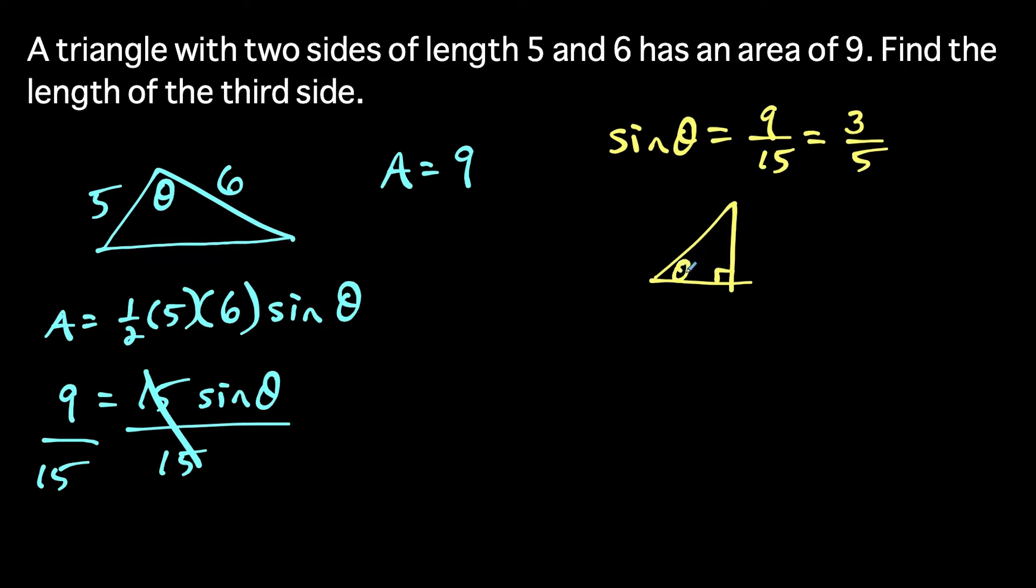And sine is the ratio, if we write out SOHCAHTOA, sine is the ratio of the side opposite to the hypotenuse. So we could label opposite of theta three, and the hypotenuse five.